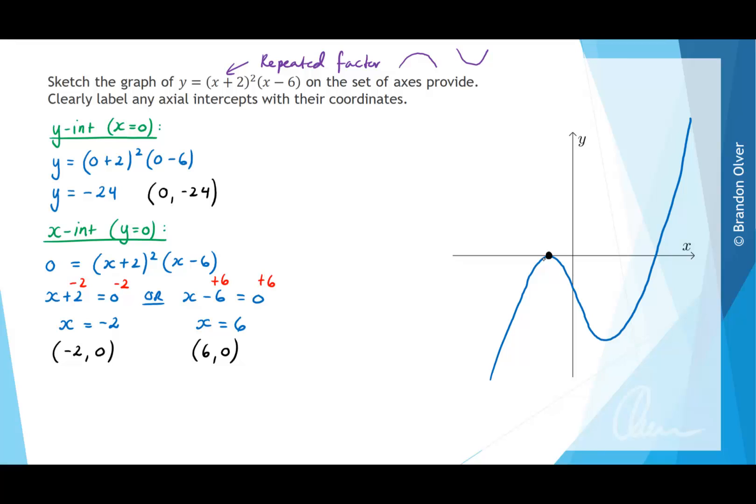This axial intercept here was at (-2, 0), and that was the repeated factor that behaves a little bit like a parabola at that point. Then the y-intercept occurred at (0, -24), and the next x-intercept occurred at (6, 0). So that's the graph of this cubic equation.